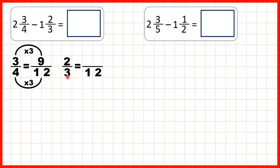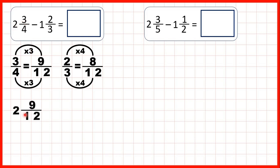Now, 3 times 4 is 12, so if we do the same to the numerator, 2 times 4 is 8. So we can rewrite our question. Instead of 2 and 3 quarters, we can write 2 and 9 twelfths, because that's equivalent to 3 quarters.